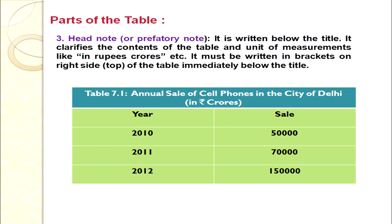After the title we discuss the head note. As you can see in the example, the head note is written in brackets — for example, 'in rupees crores.' The head note is written just below the title in brackets. Its purpose is to clarify the content of the table and give the units of measurement. It must be written in brackets on the right-hand side, immediately below the title.